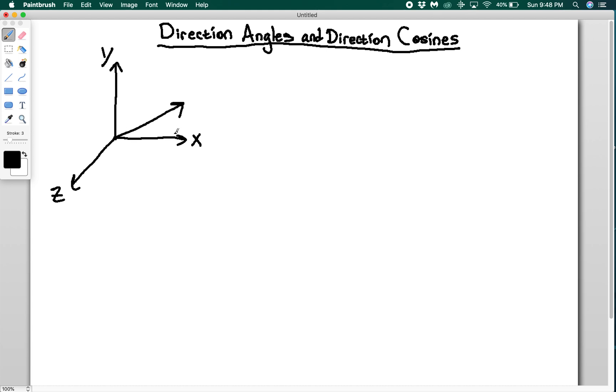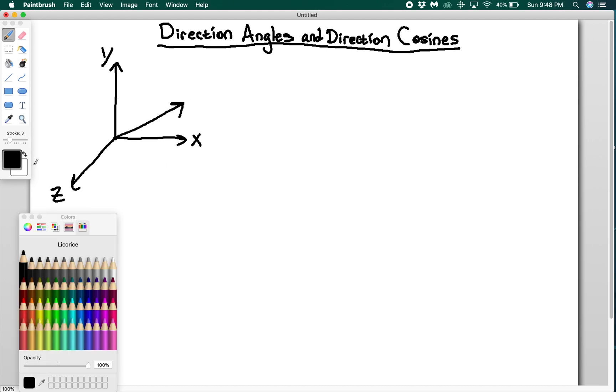And I have a vector in an arbitrary direction. Let's do some color coding. So I'm going to have alpha as one of my direction angles. The direction angles are the angles that your vector v makes with each of the axes. So the one it makes with the x-axis is going to be equal to alpha.